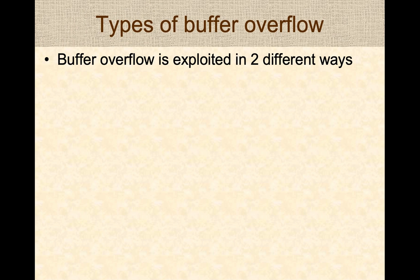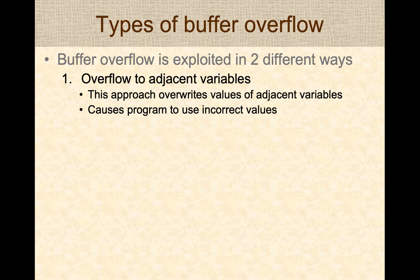There are different types of buffer overflow attacks and they are essentially exploited in two different categories. The first category of exploits uses overflow to attack or change the value of adjacent variables, causing the program to operate incorrectly, which can be used in a malicious way.